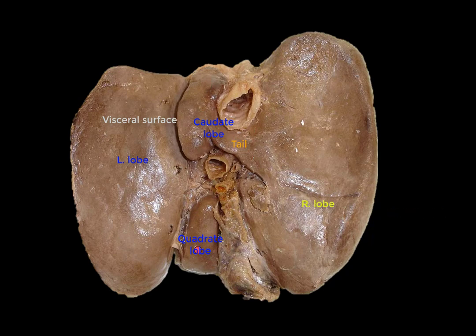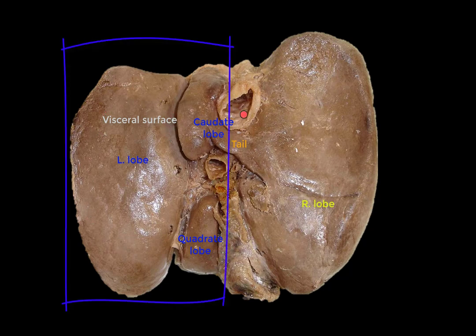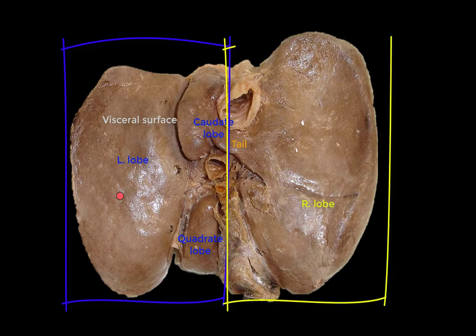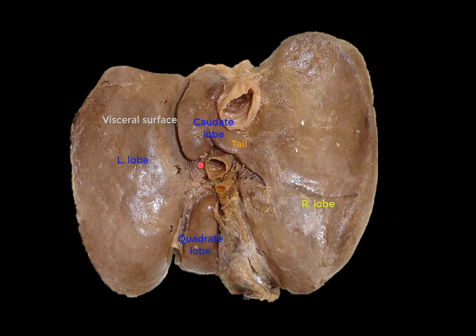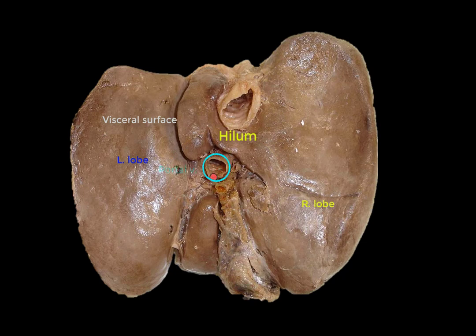These two lobes functionally belong to the left lobe of the liver, and thus the liver can be divided into equal right lobe and left lobe functionally speaking. You can see here that the visceral surface of the liver also shows a transverse sulcus — this is an area where structures pass in and out of the liver, called the hilum of the liver. Three main structures are located here: the largest is the portal vein, then we have the hepatic artery and the bile duct.